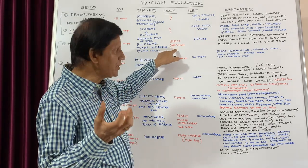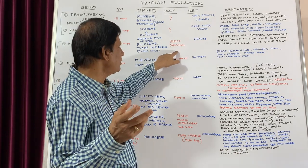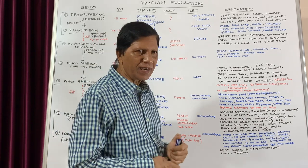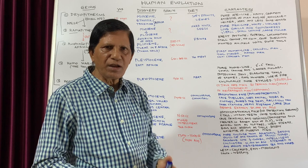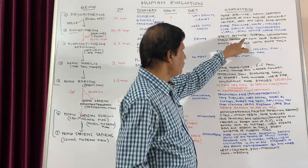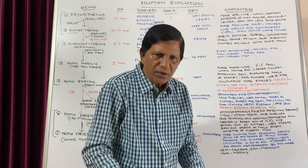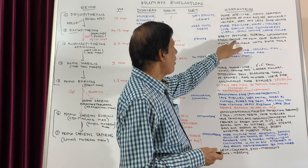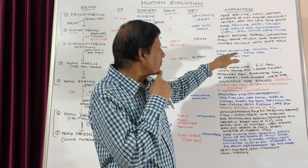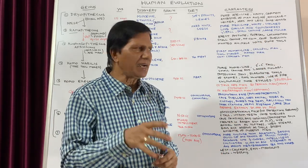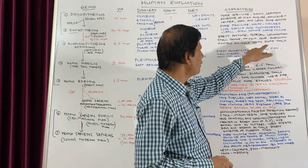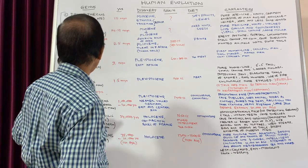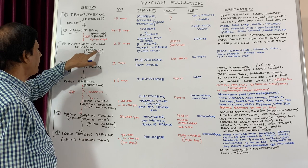Australopithecus africanus had a cranial capacity of 500 cc — very small — and is known as 'ape brain.' Their diet was mainly fruits. Characters: they had erect posture and bipedal locomotion, replacing the earlier knuckle movement. They had small canines and no chin. They were cave dwellers who hunted animals using stone tools. They are also known as the African ape-man.